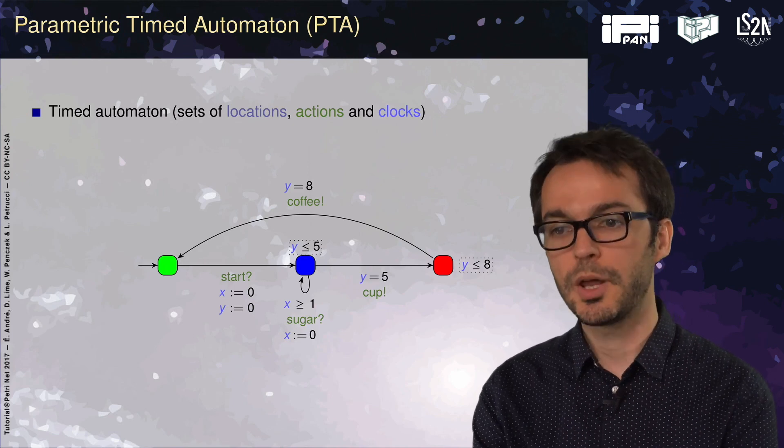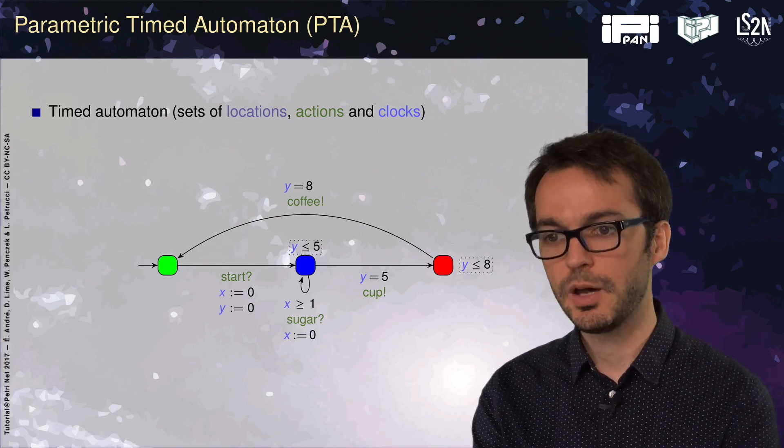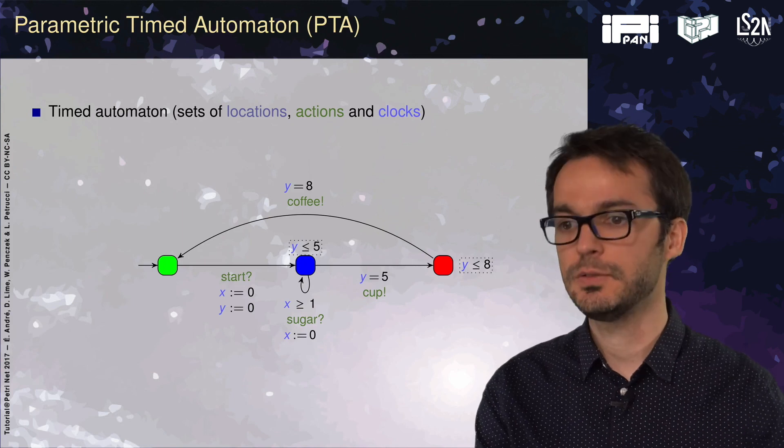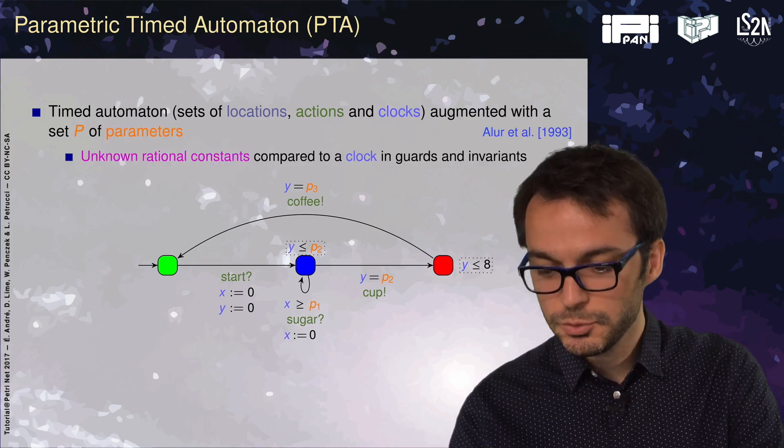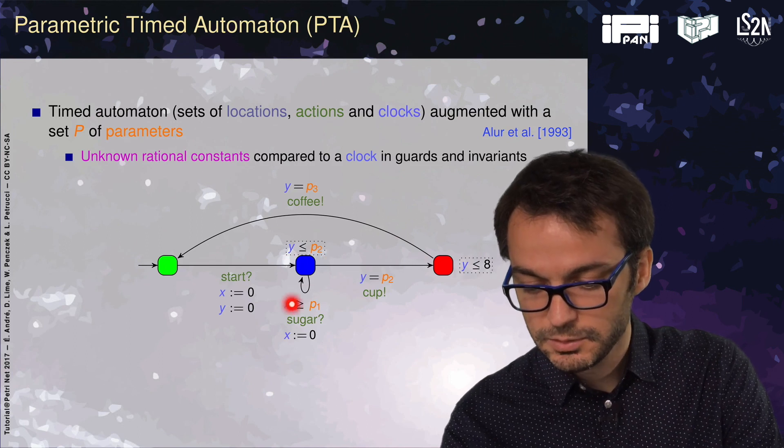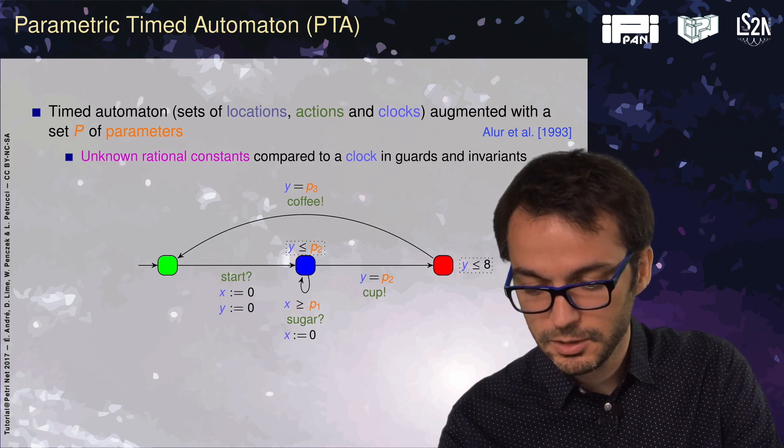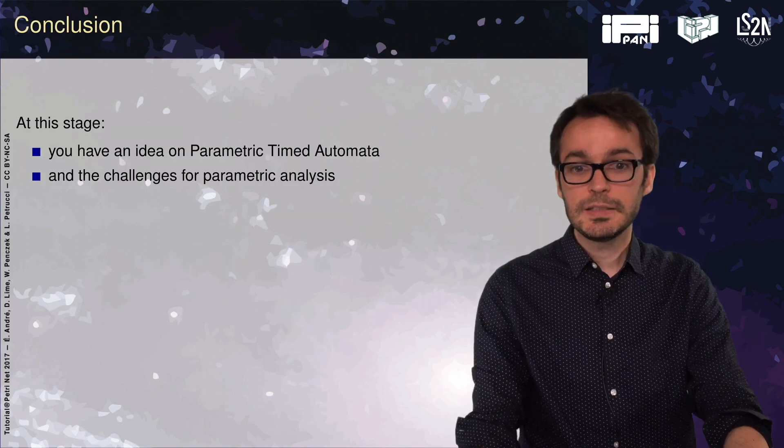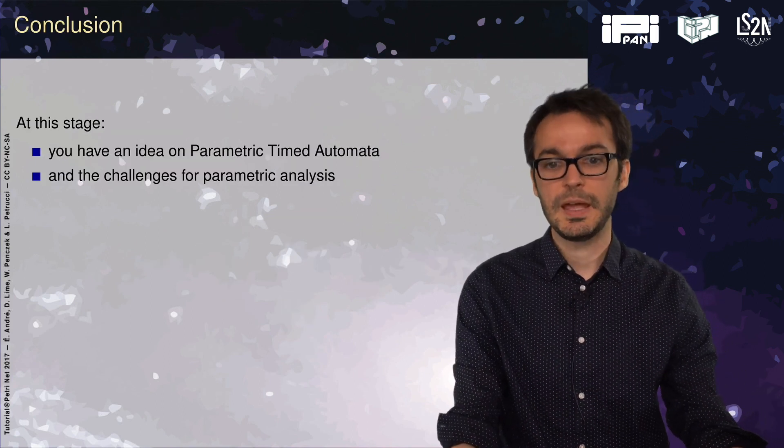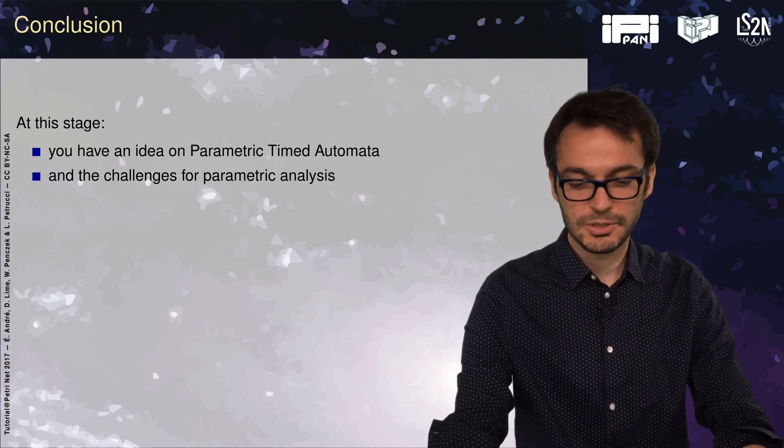Parametric timed automata extend timed automata with parameters. We still have locations, actions, and clocks. Now we have a set of parameters that we can use in some of the guards or invariants. But we can still use timing constants if we like. At this stage, you have an idea on parametric timed automata and the challenges for parametric analysis.